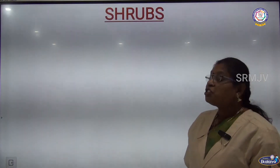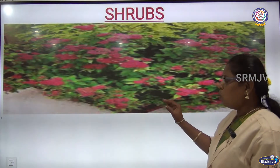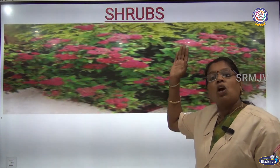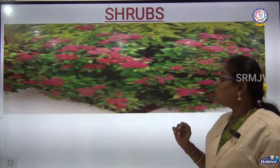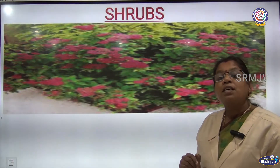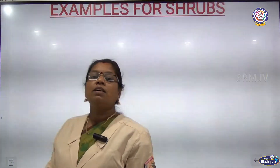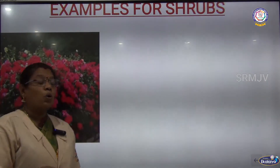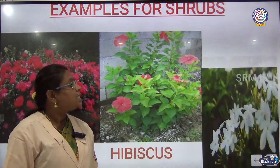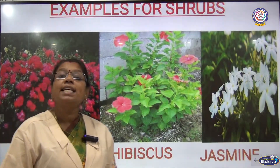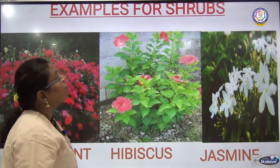Next are the shrubs. Look at this picture — this plant is small but bushy. It is not as tall as a tree. These plants are called shrubs. Shrubs have small woody stems and are bushy. Examples are rose plants, hibiscus and jasmine.